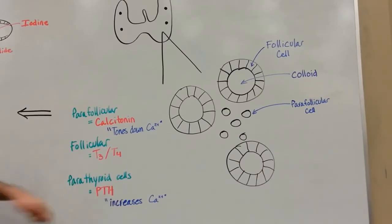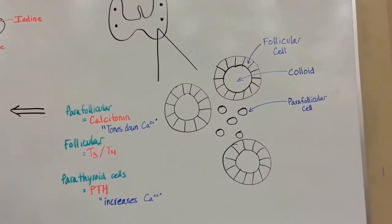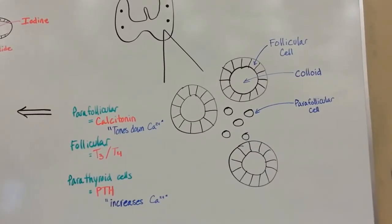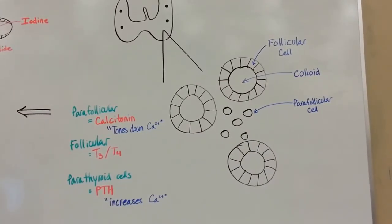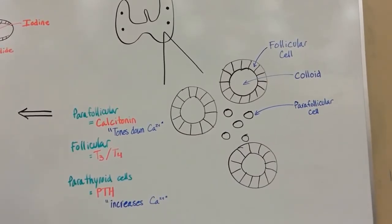Parathyroid hormone increases your body's extracellular calcium levels. It's going to tell your kidneys to resorb as much calcium as it can, to retain as much. And also your gut, it's going to try and take up as much calcium as you can from your diet. And lastly, it's going to break down bone and dump the calcium into the bloodstream.